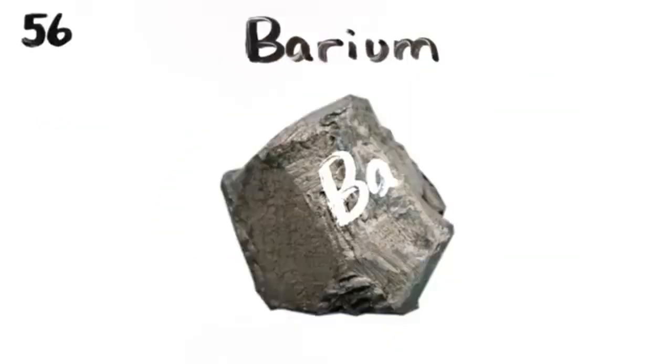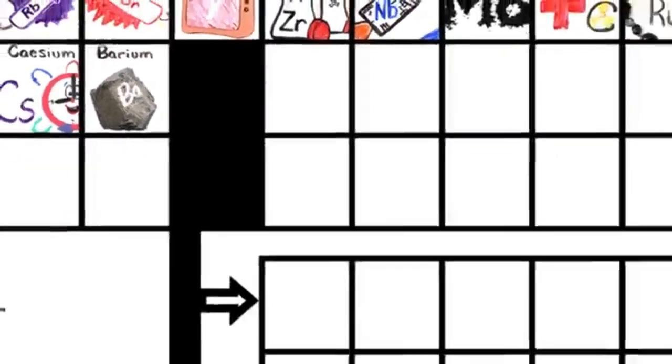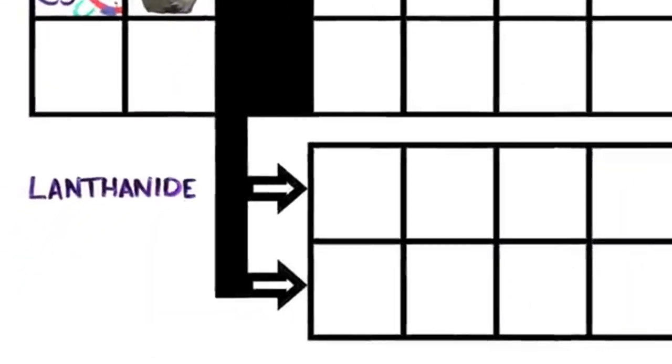Barium is 56, and this is where the table splits, where lanthanides have just begun.